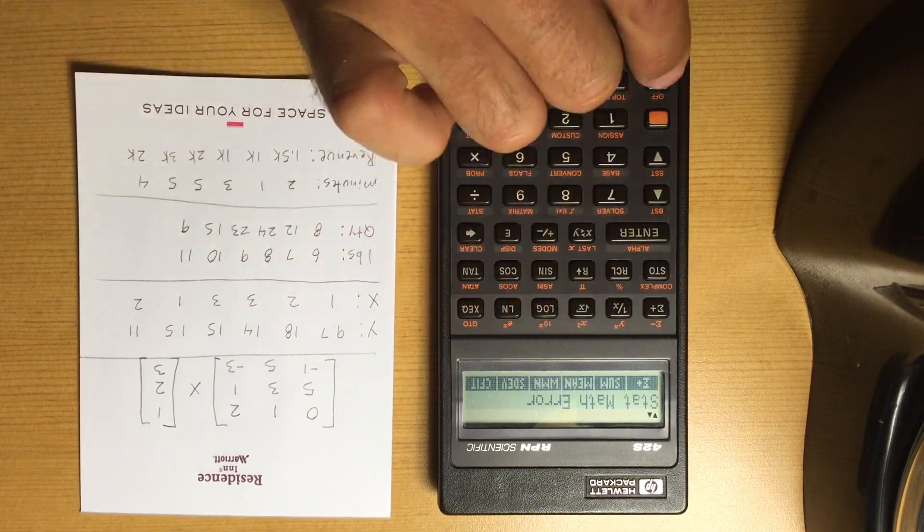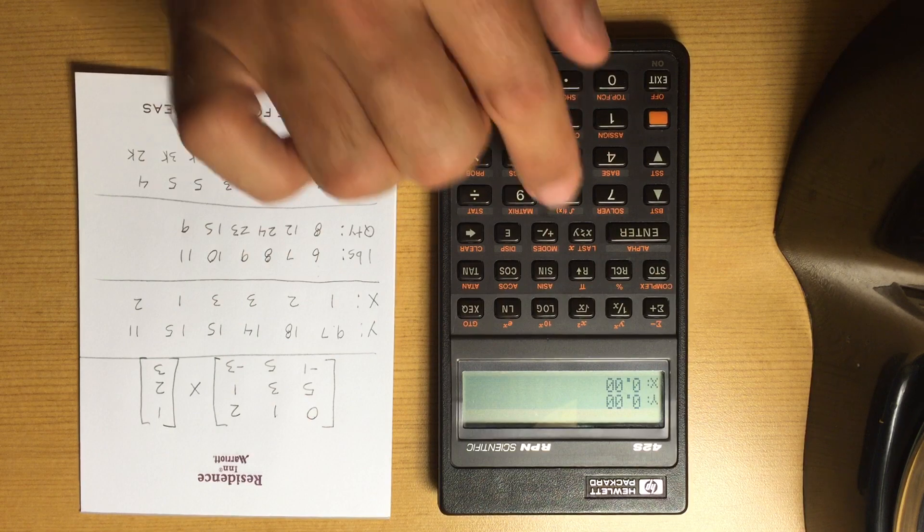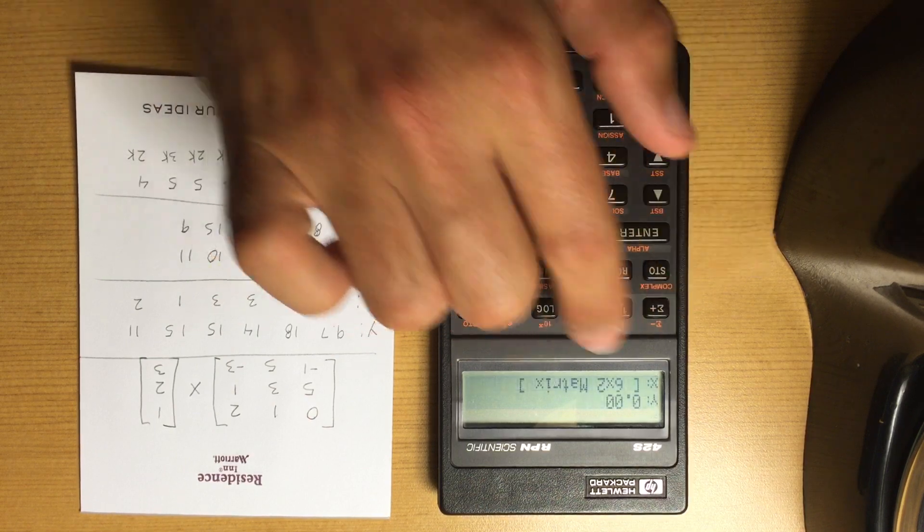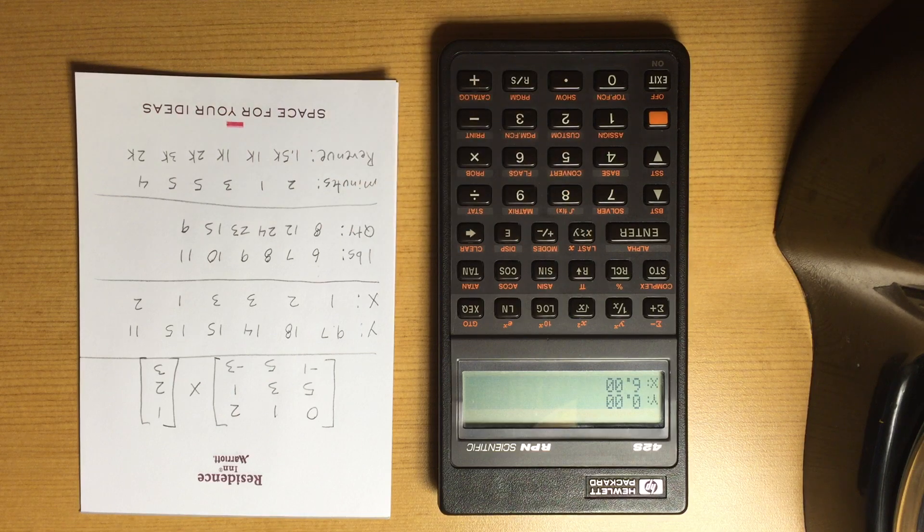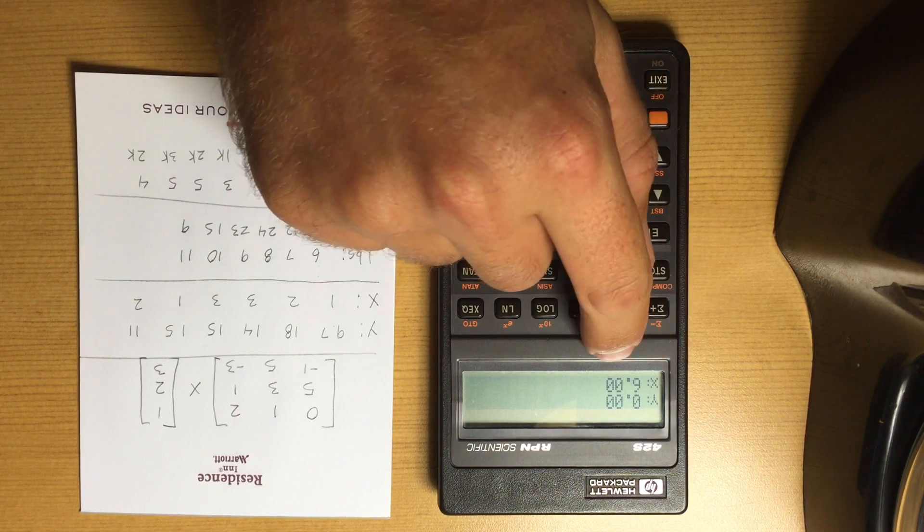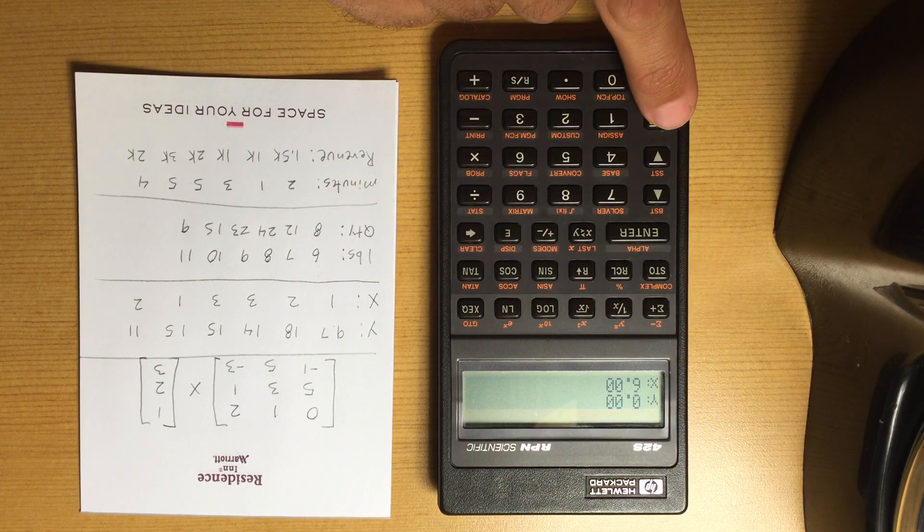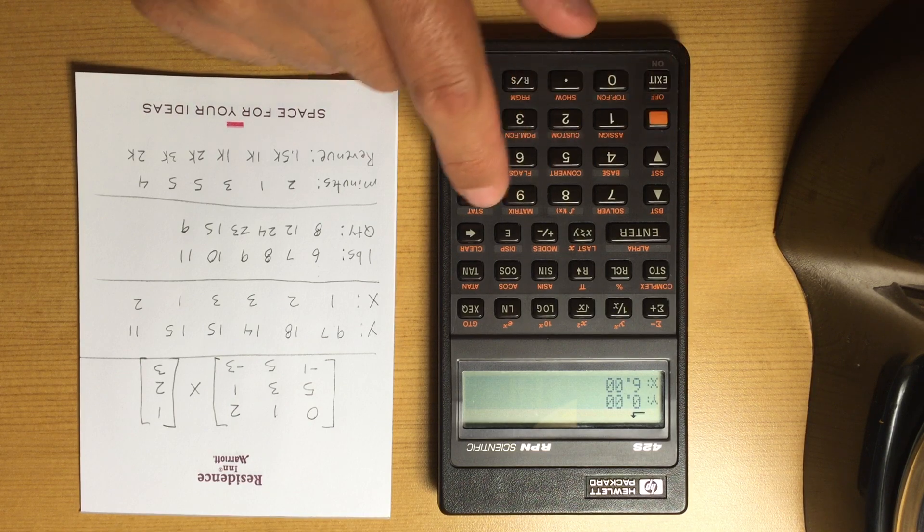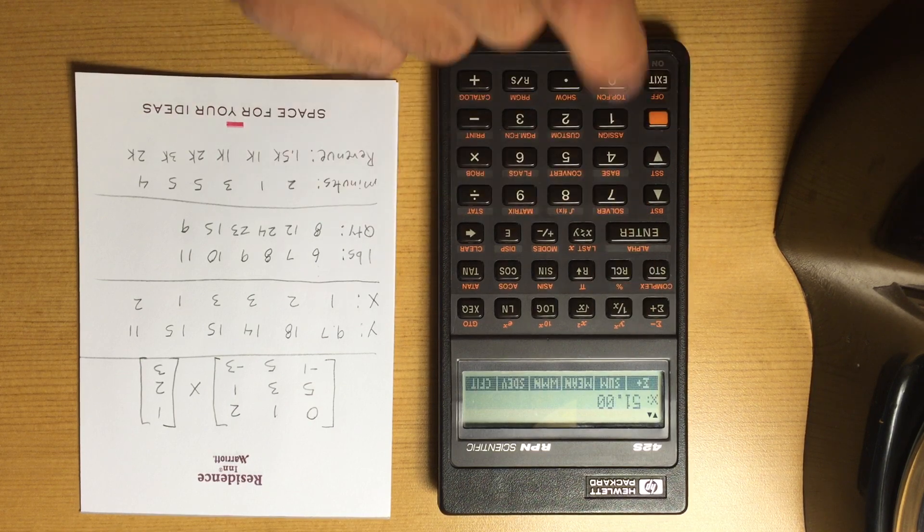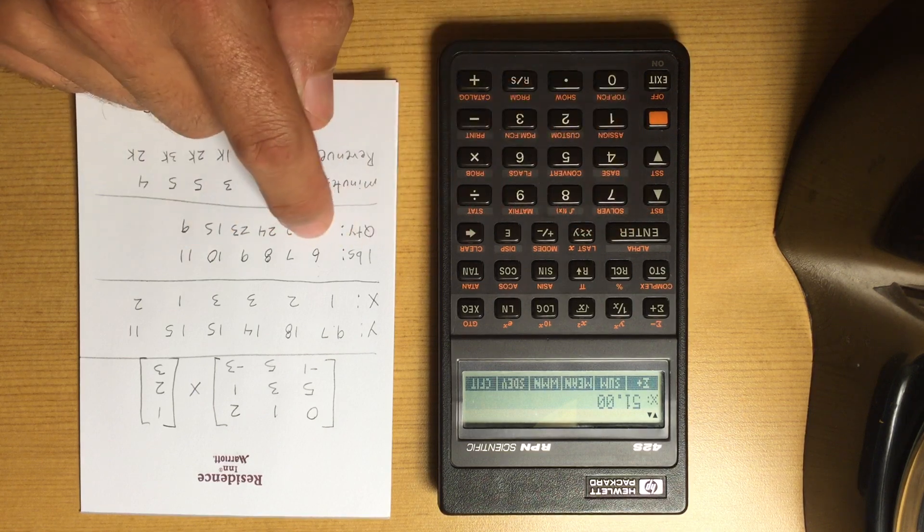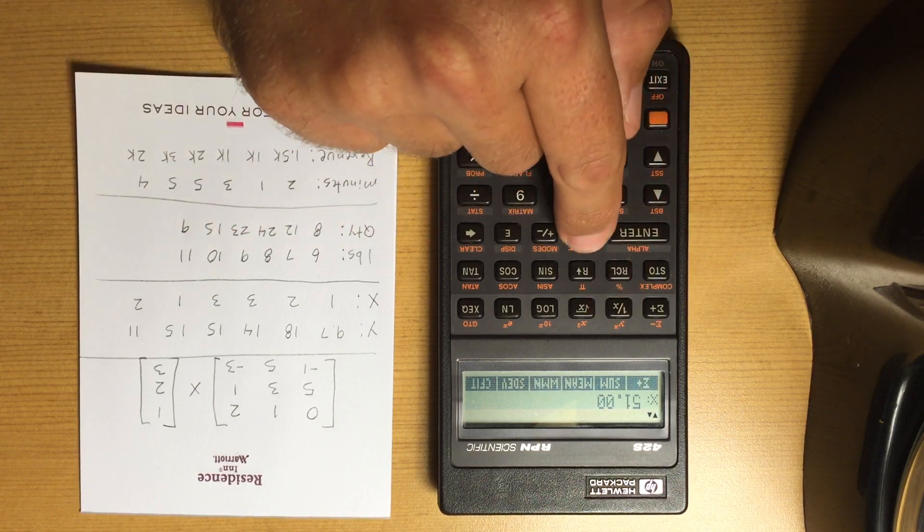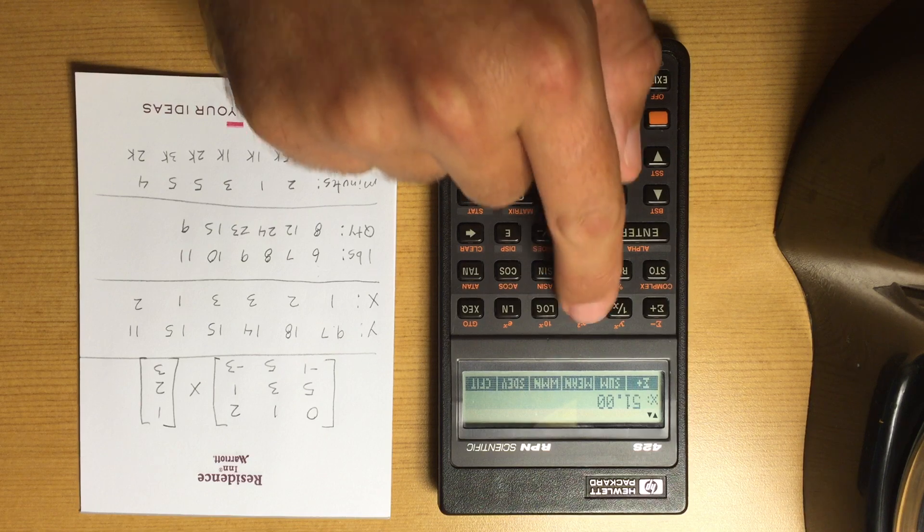If I go to my statistics, there's nothing in my sum, mean, no error—that's all cleared. Recall matrix 1, got the 6 by 2. Hit the summation button. It runs through the X column, runs through the Y column. It tells me I've got six elements. Now I can go here and look at the sum.